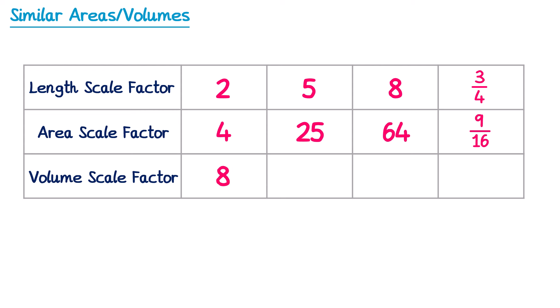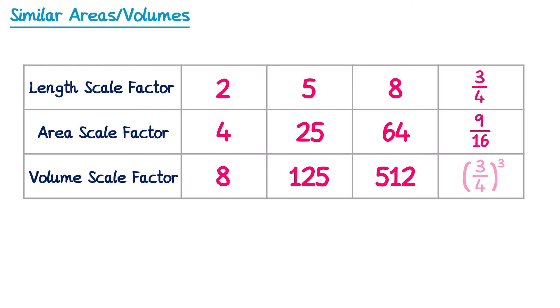For a length scale factor of 5, the volume scale factor is 5 to the power 3 — 5×5×5 is 125. For a length scale factor of 8, the volume scale factor is 8 to the power 3 — 8×8×8 is 512. For the final one, the length scale factor is 3 quarters, so the volume scale factor is 3 quarters cubed. To do this we calculate 3 cubed and 4 cubed: 3 cubed is 27 and 4 cubed is 64, so we have 27 over 64.